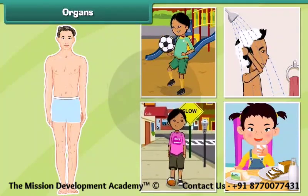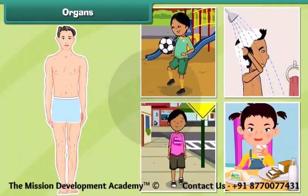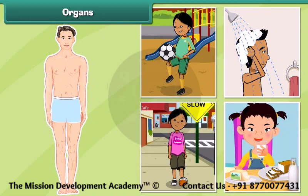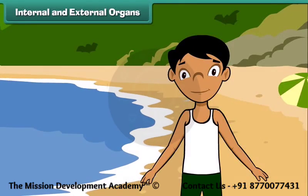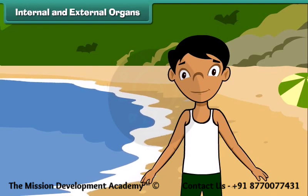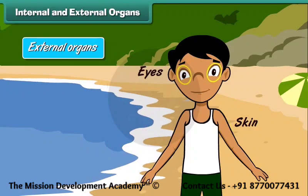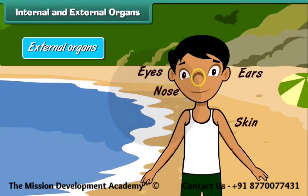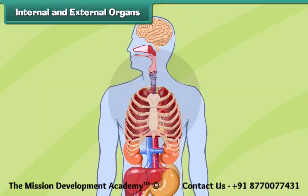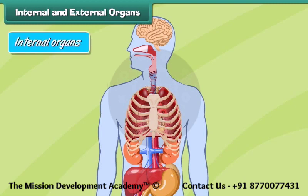Let us learn more about the internal and external organs of the human body. The organs that are located on the exterior of the human body and are visible to the human eye from outside are called external organs. For example, skin, eyes, ears, nose, legs, etc.